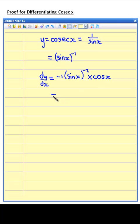We now tidy this up. We have minus 1 on the numerator, multiplied by cos x. And because the bracket has a negative power, we can move that bracket down to the denominator, and therefore it will no longer have a negative power. It will be to the power of 2.